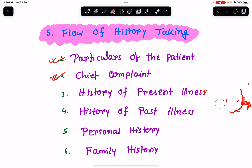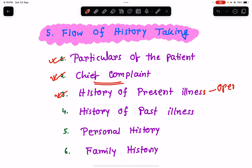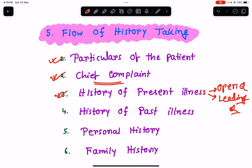Next is the history of present illness. In the history of present illness, we need to elaborate on the chief complaint. A good history of present illness will really help in the diagnosis of most cases. First, you give an open question — ask the patient to describe their symptoms in their own words, and you listen carefully. A good doctor should be a good listener. After the open question, you start asking leading or closed questions to build a thorough history of present illness.